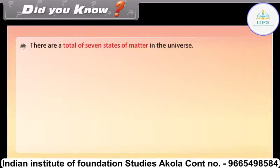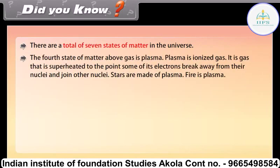There are a total of seven states of matter in the universe. The fourth state of matter above gas is plasma. Plasma is ionized gas — it is gas that is superheated to the point where some of its electrons break away from their nuclei and join other nuclei. Stars are made of plasma, and fire is plasma.